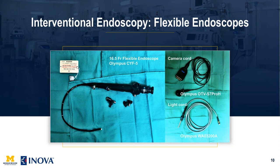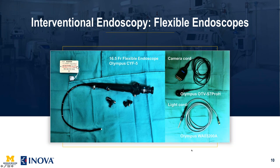The 16.5 French flexible reusable endoscope is one of the workhorse scopes. It can be used once, autoclaved, and used on the next patient. It has an area where the camera attaches, an area where the light source attaches, and a working channel where fluid can be administered and a variety of devices can be placed. One end of the camera cord attaches to the endoscope itself, and the other end attaches to your tower. The light source is emitted from the tower.